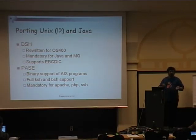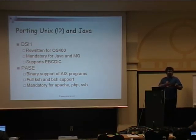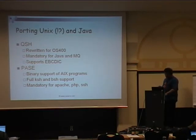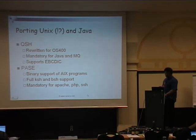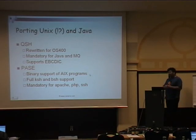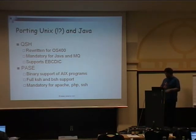We have two different UNIX environments. One is called QShell, written specifically for OS/400. It supports POSIX and is mandatory if you want to run any Java or WebSphere MQ. There is also something called PASE, which provides binary support for AIX programs — I can take any binary compiled on AIX, place it in a specific location on the AS/400, and execute it. This means I can port OpenSSH, which is good, but I can also port Netcat, which is not. PASE is mandatory if you want to write web applications on the AS/400.